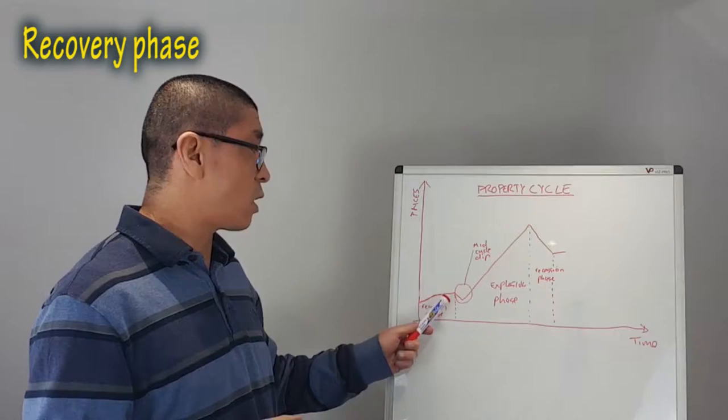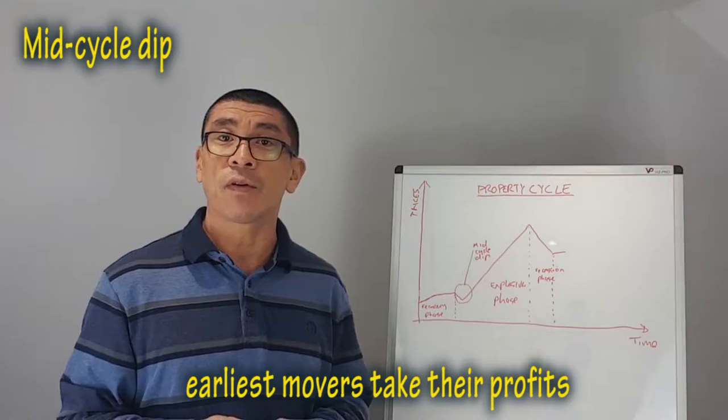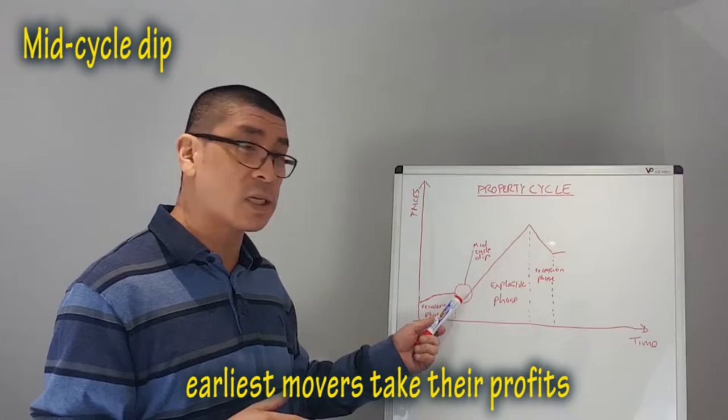This raises for a while, and then we come to a mid-cycle dip. This is where some of the early movers take their profits and you'll see a slump in prices.